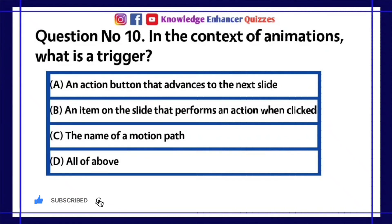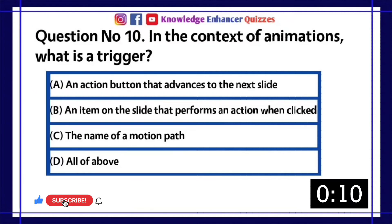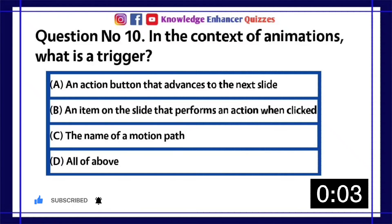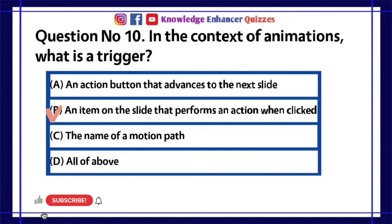Question number 10. In the context of animations, what is a trigger? A. An action button that advances to the next slide. B. An item on the slide that performs an action when clicked. C. The name of a motion path. D. All of the above. Option B is the right answer.